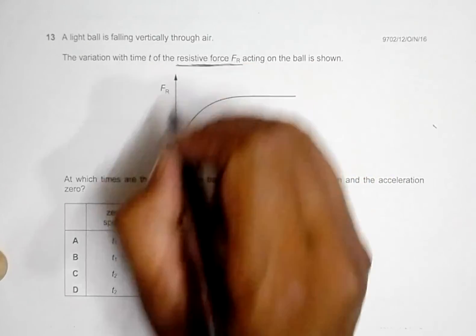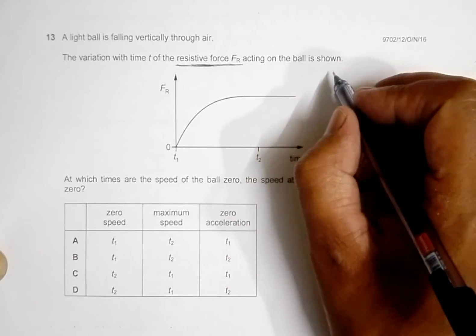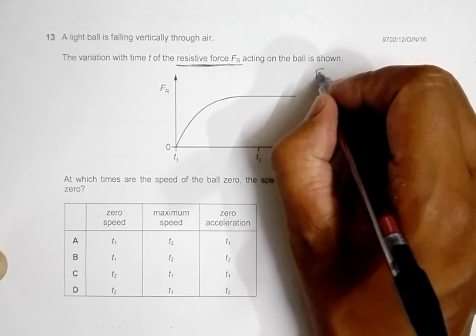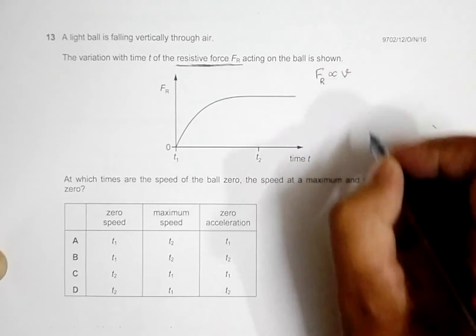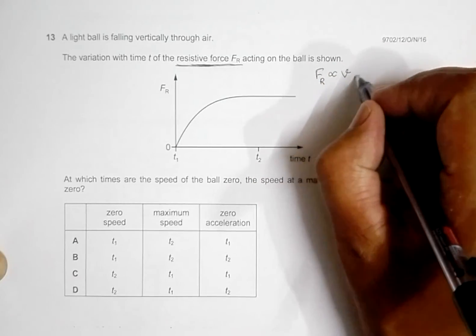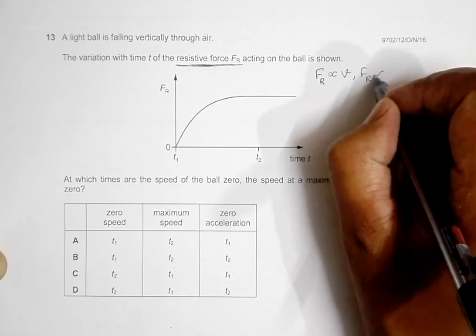The one thing that we have to realize is that when a body falls through a viscous medium or some sort of medium, there are several types of resistive forces. Some type of resistive forces will be proportional to V, for example the viscous force, and some type of forces could be proportional to V square.